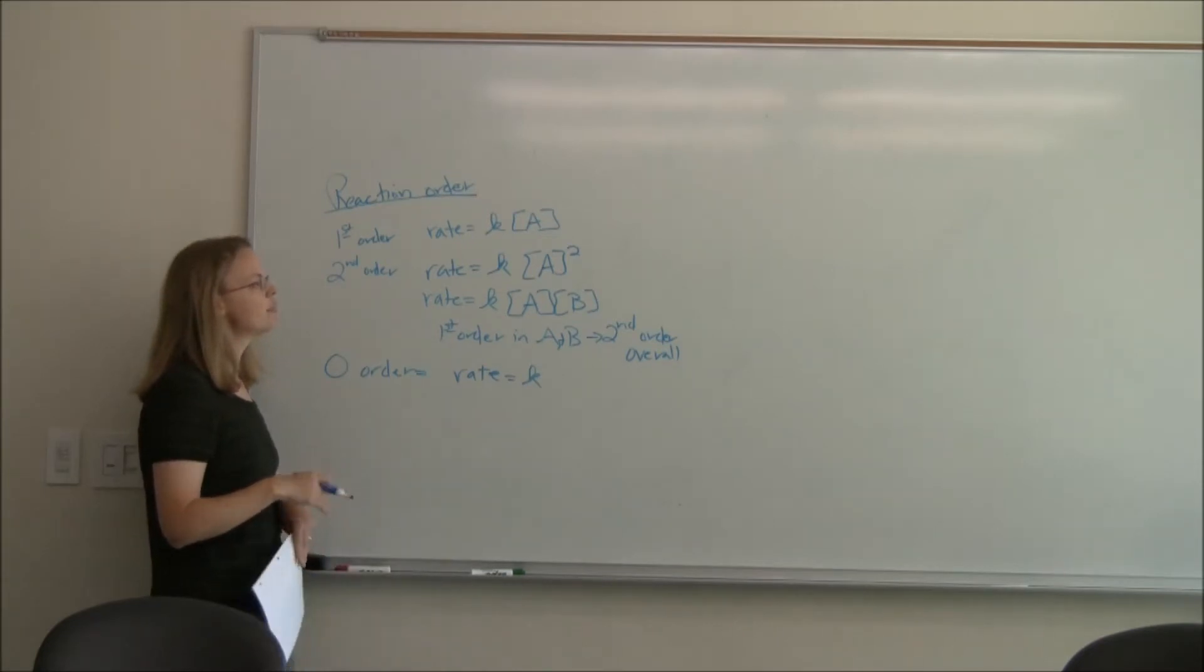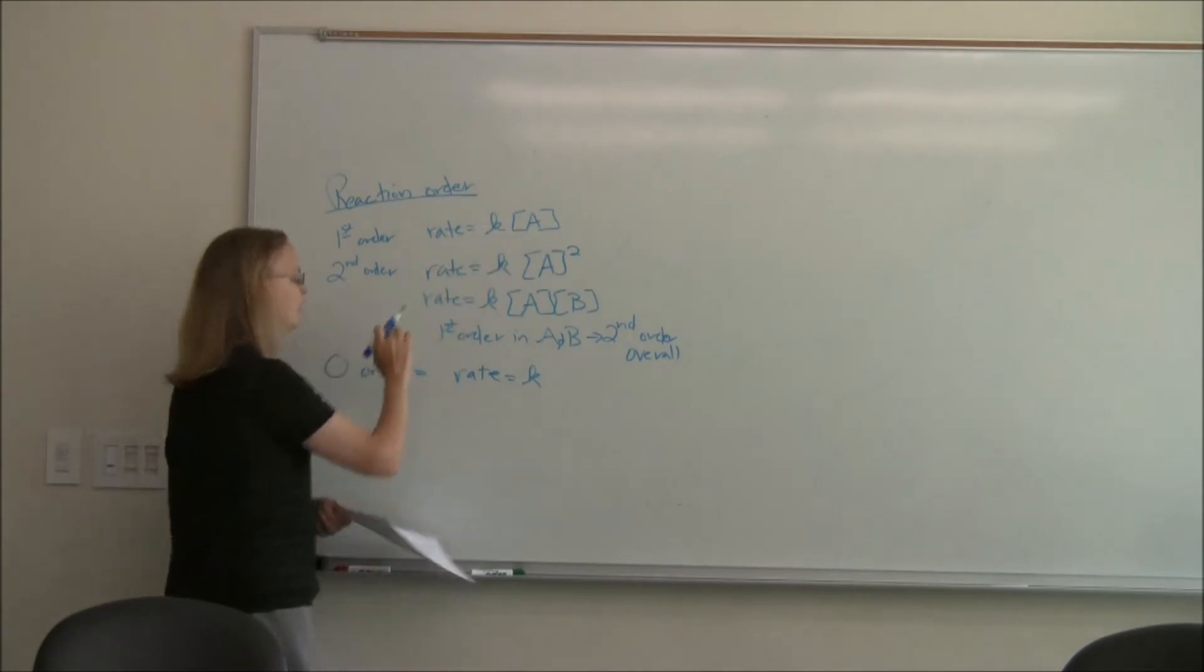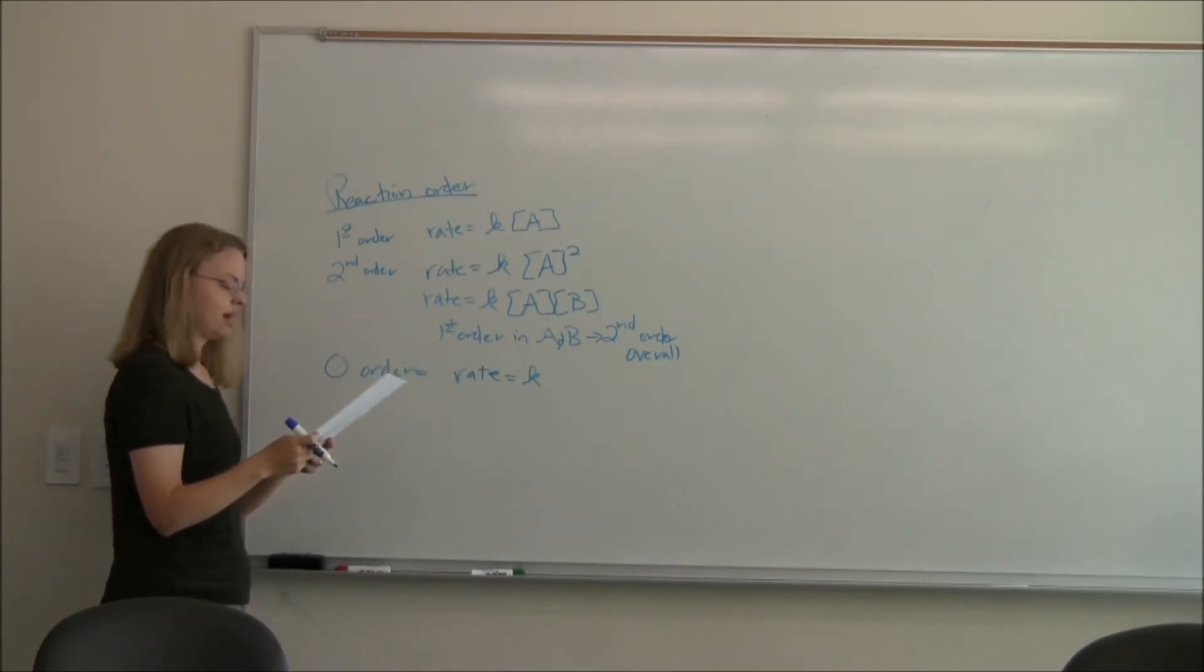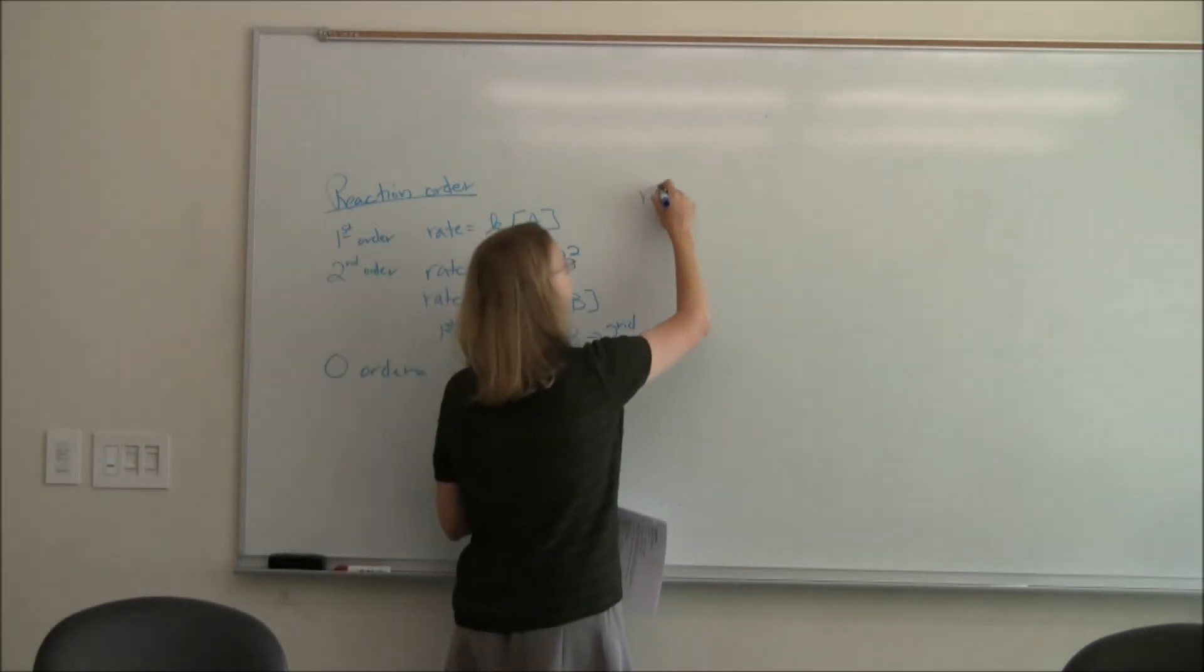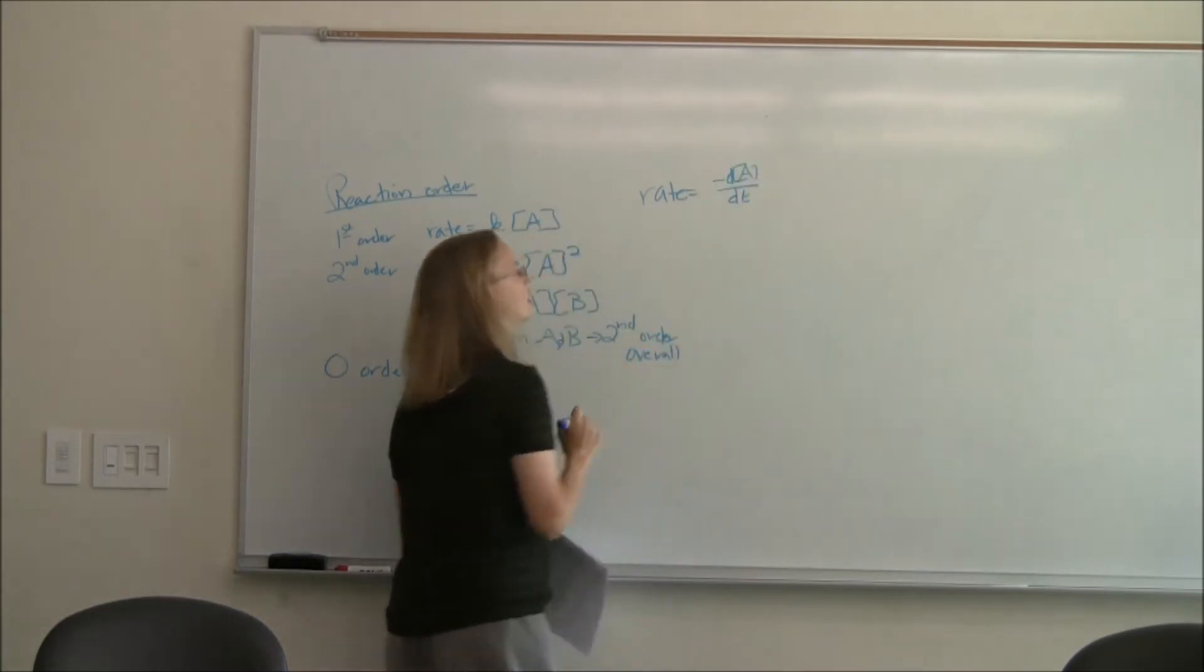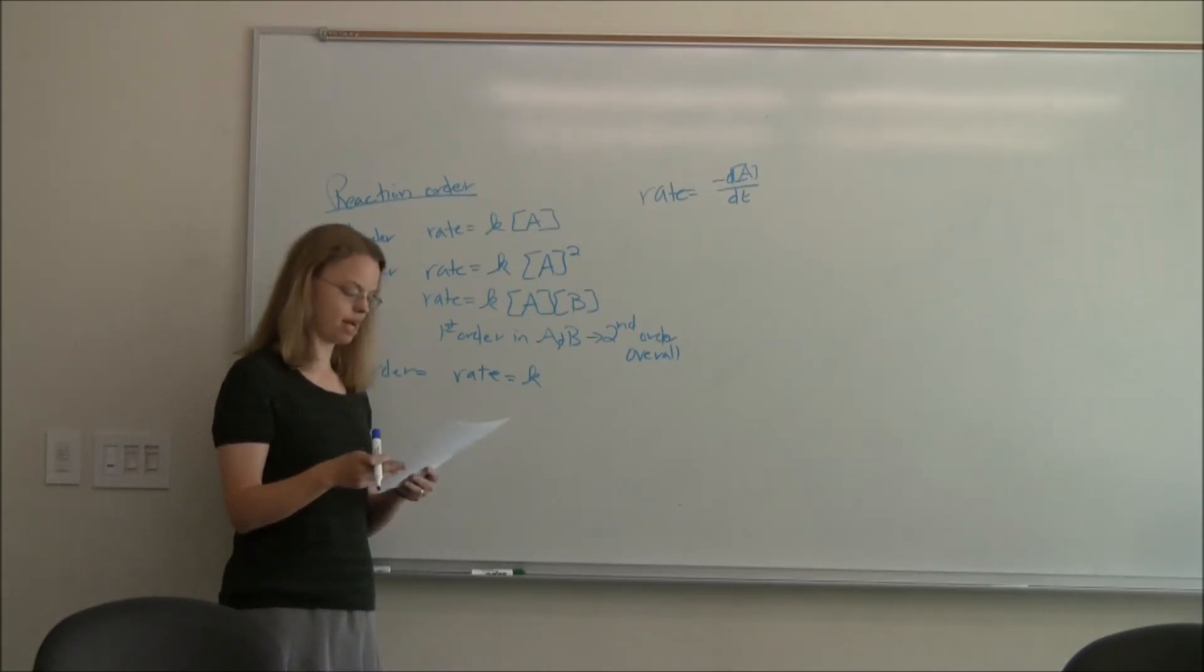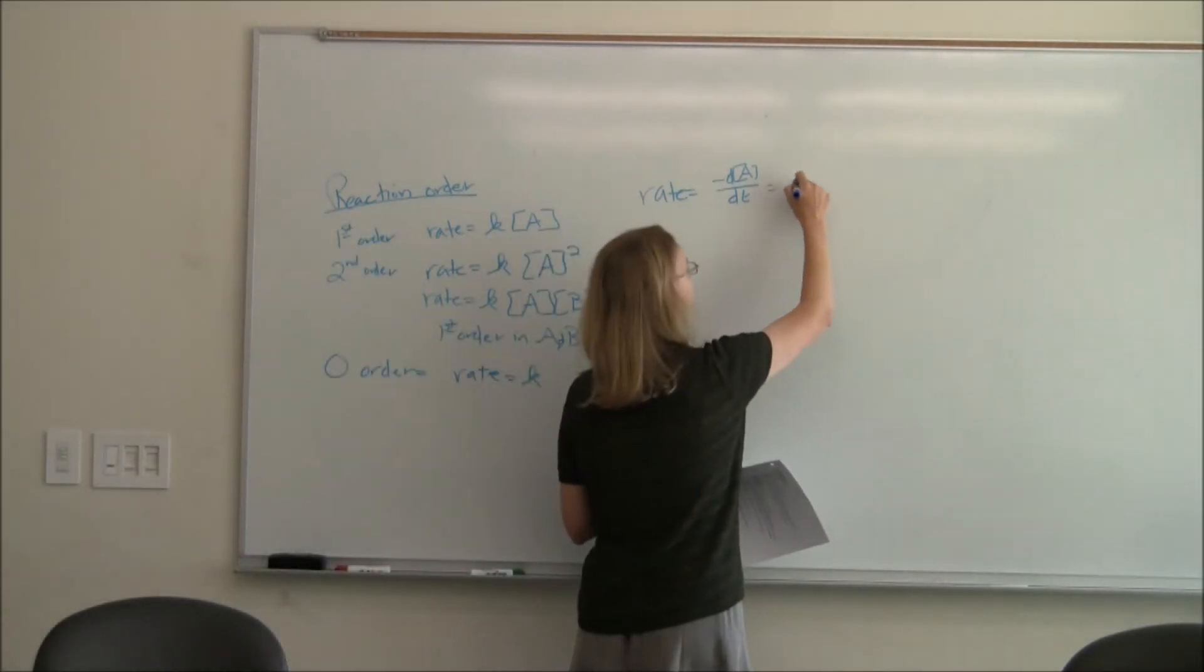And so what we want to be able to do is take these rate laws, then, and get them to something usable. And something usable is probably concentration. What's the concentration of A that I have? How can I relate that back to rate? And so rate, I haven't really defined that for you. What we can look at is this. The change in the concentration of A with time. Those are supposed to be brackets. For that. And because we're going to be using up A, it's going to be a minus sign. Because A is disappearing over time.